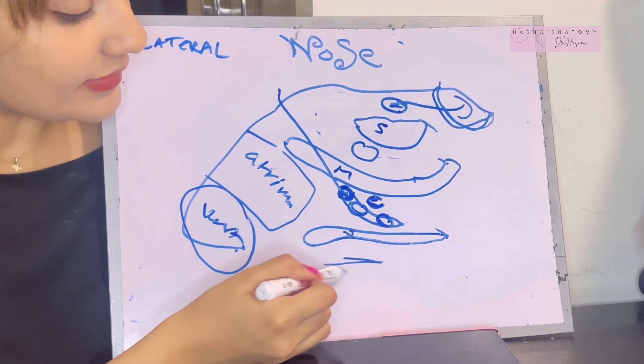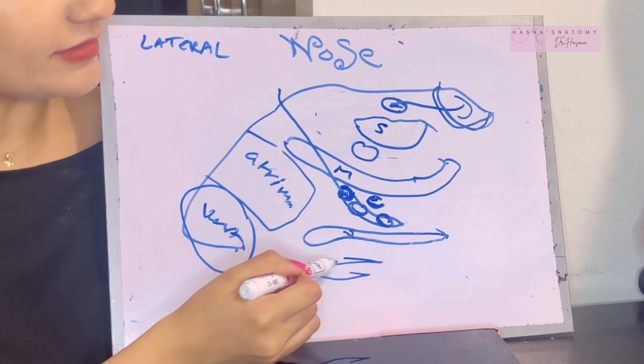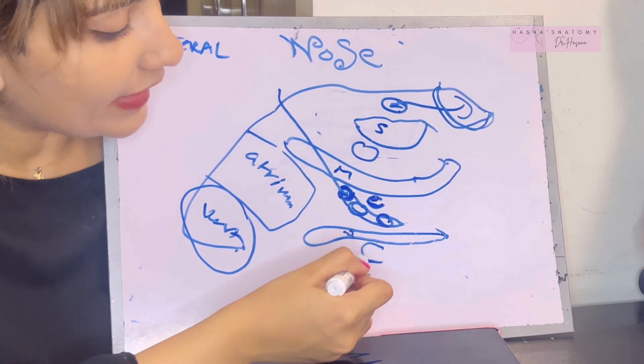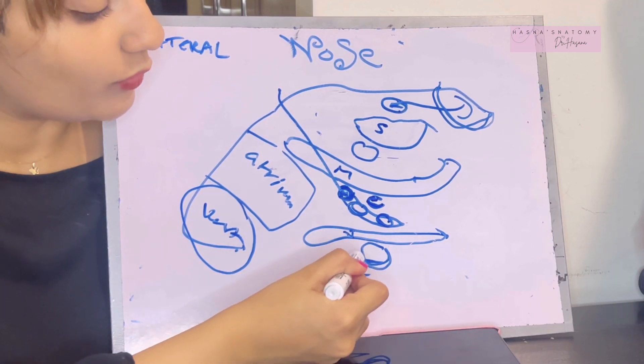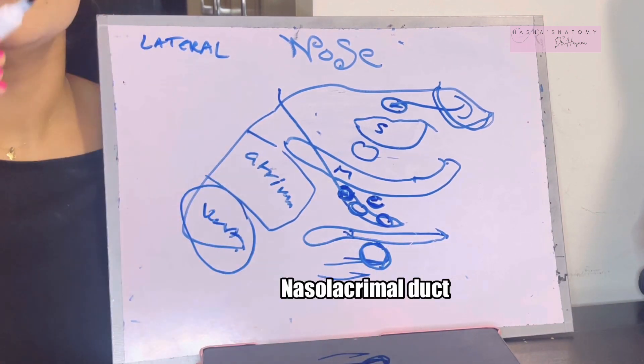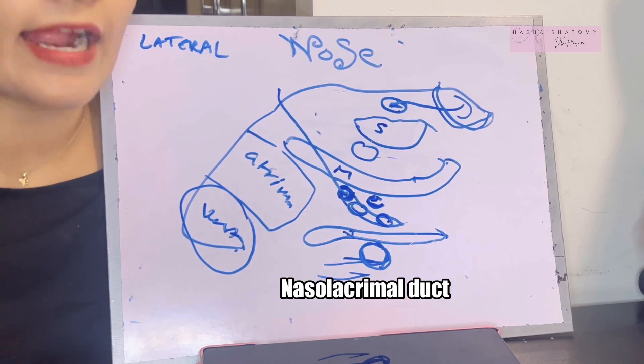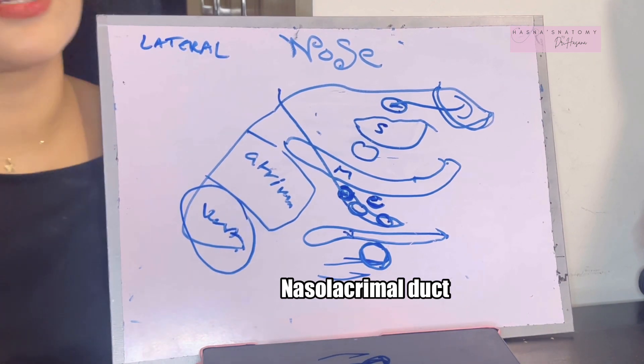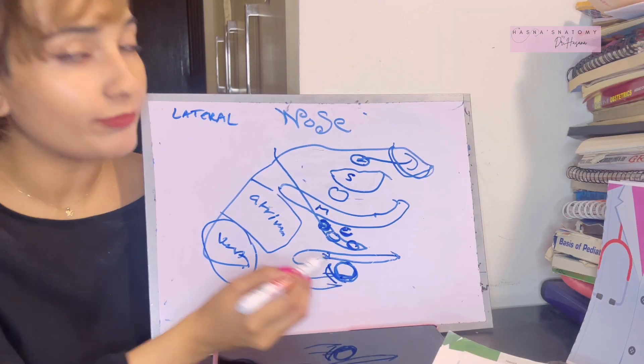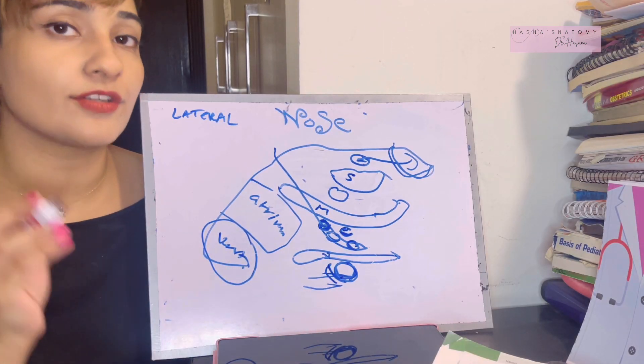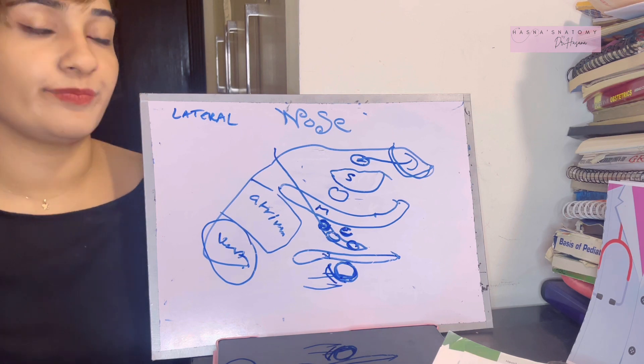The inferior meatus — over here lies a very important opening of the nasolacrimal duct, and it is guarded by this valve known as Hasner's valve.